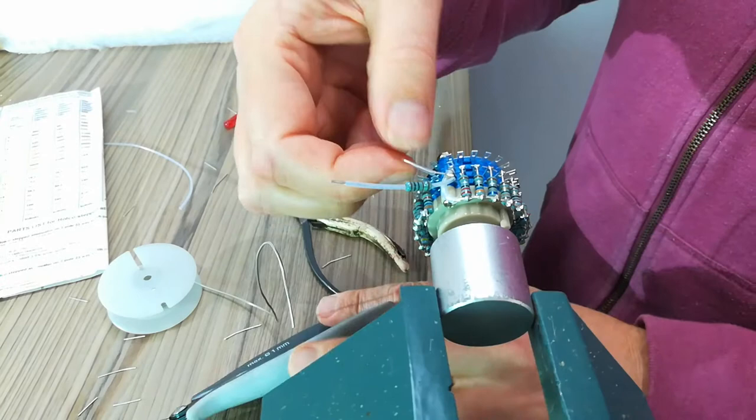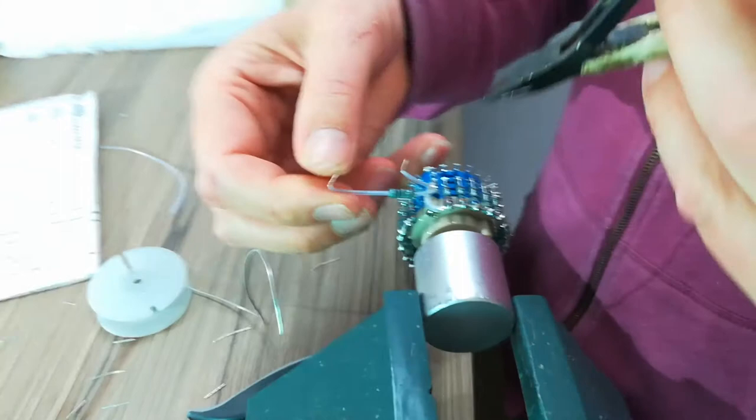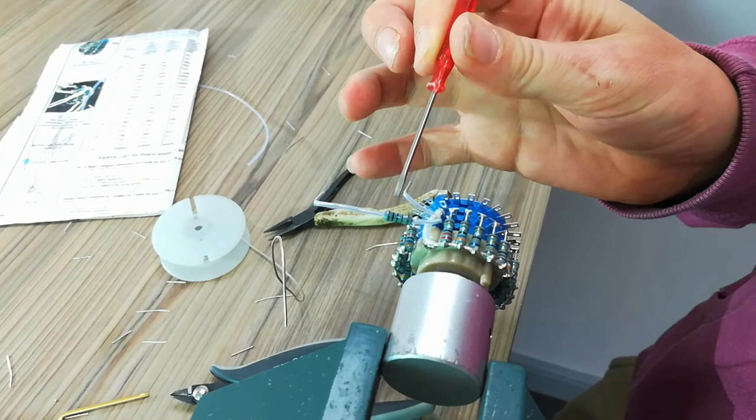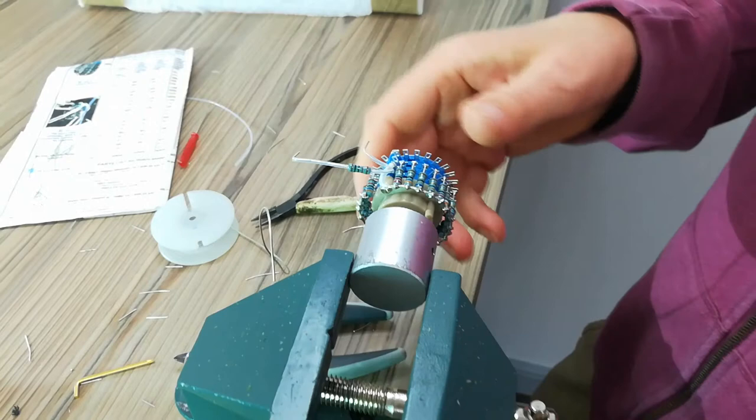So here we have, your signal input goes through here to there. Signal output is there, and then your earth goes to the earth bar there. And then just give it a good test.